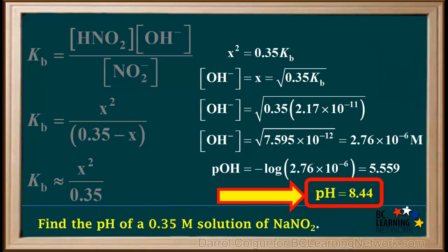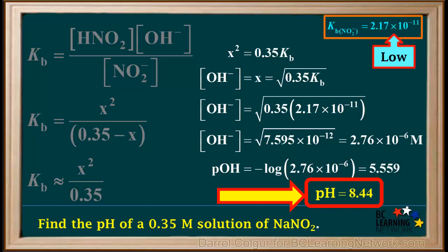So now we have a final answer: the pH of a 0.35 molar solution of NaNO2 is 8.44. This is reasonable because NO2⁻ is a weak base, so we would expect its pH to be above 7, but not very high because the Kb value is quite low at 2.17 times 10 to the negative 11th.